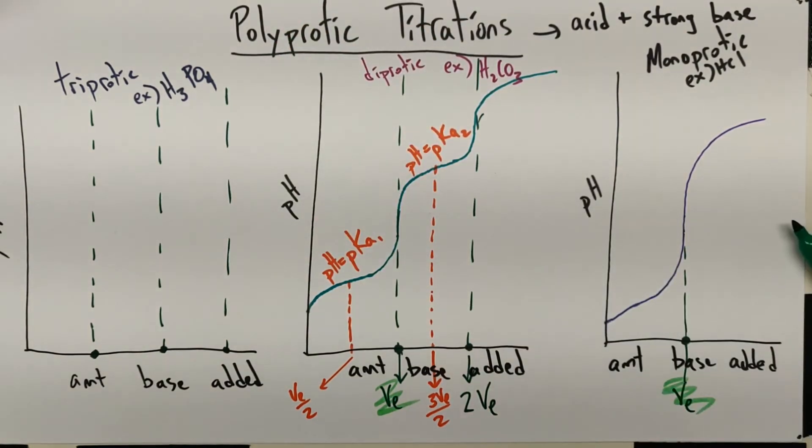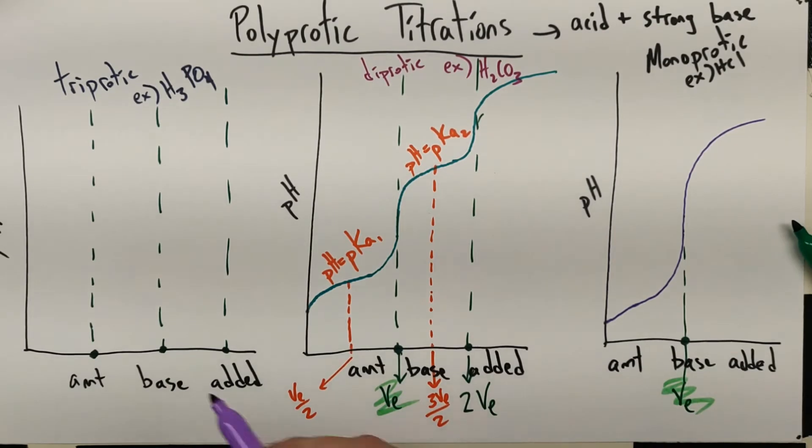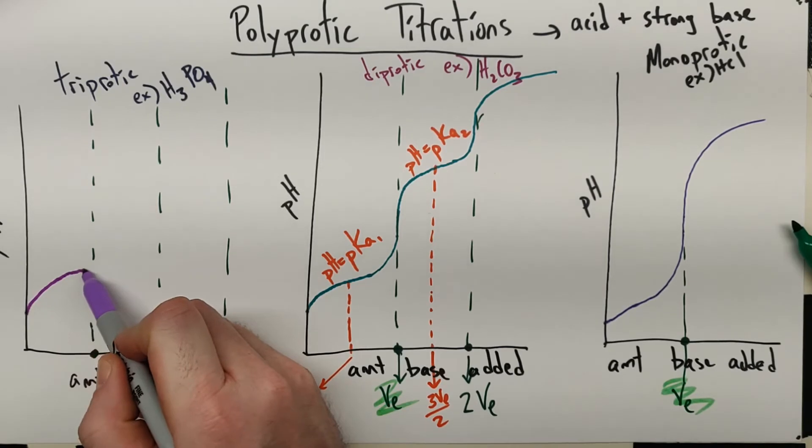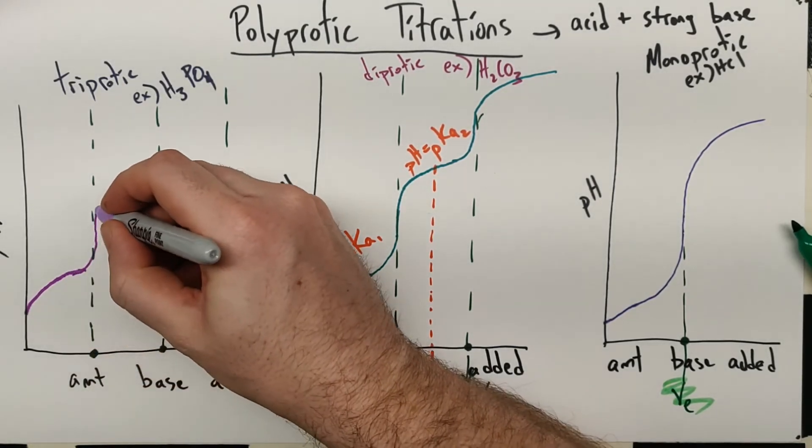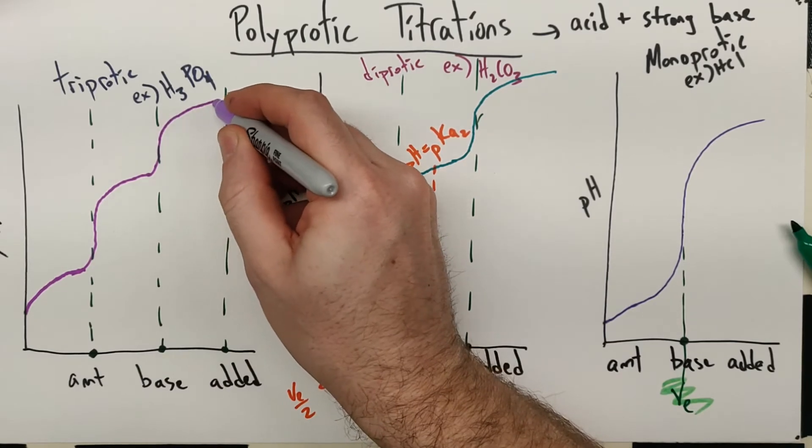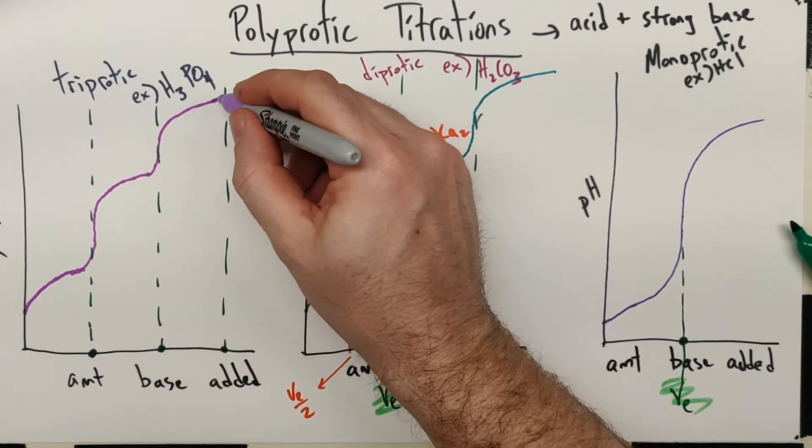And so we're going to have the same shape we just saw in the previous picture. So we're going to see the third H here. It'll start somewhere. You get a buffer region. It's going to jump up. Buffer region. Jump up. Buffer region. And it just keeps going.